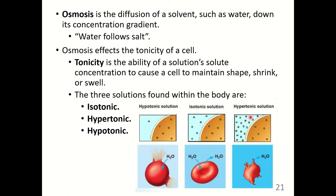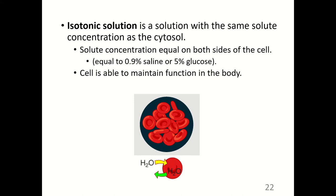In a hypotonic solution, there is more salt inside the cell than outside, so water goes into the cell to dilute the internal salt concentration, causing the cell to swell. The isotonic solution has equal solute concentration as the cytosol, equivalent to about 0.9% saline or 5% glucose — the cell maintains its normal shape and function. A hypertonic solution has greater solute concentration than the cytosol — greater than 0.9% saline or 5% glucose — so water is pulled out of the cell, causing it to shrink, also known as crenation, impairing cell function.